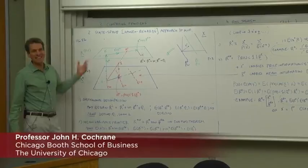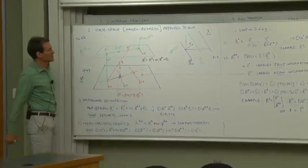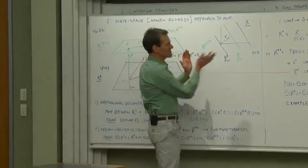So we did the traditional approach to the mean-variance frontier. Now I'd like to do the state-space approach to the mean-variance frontier, or Hansen and Richard's approach, because they're the ones who wrote the paper that showed how this works.